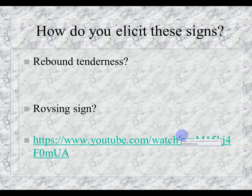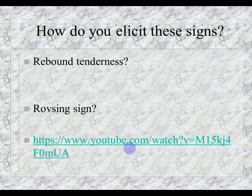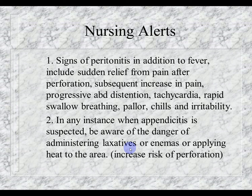Rebound tenderness is elicited by pressing on the right lower quadrant and releasing, causing jarring of the organs. The Rovsing sign is applying pressure to the left lower quadrant and, upon release, it still elicits referred pain to the right lower quadrant. Rebound tenderness itself is not specific to appendicitis — it simply indicates peritoneal irritation — but these two signs help differentiate appendicitis. Please watch the YouTube videos as they show McBurney's point and explain the Rovsing sign in detail.